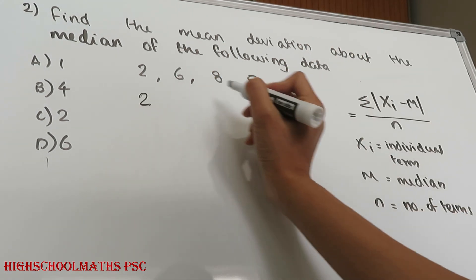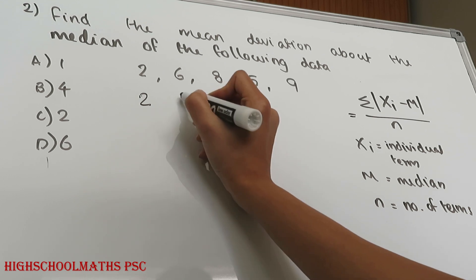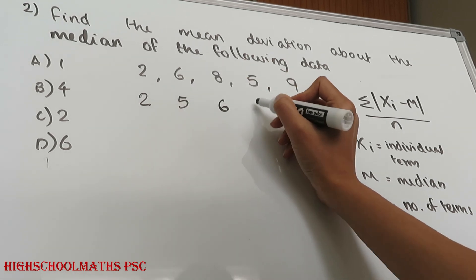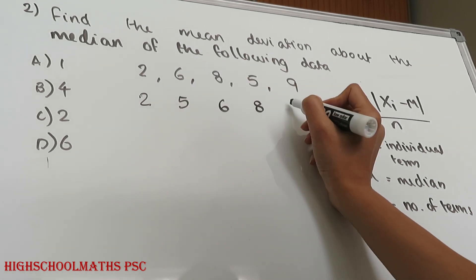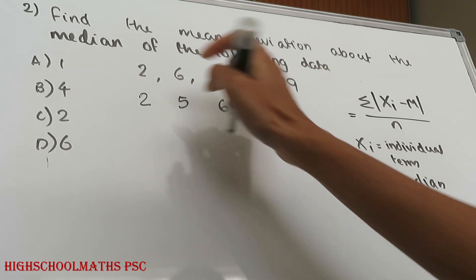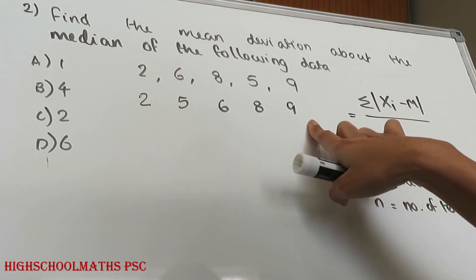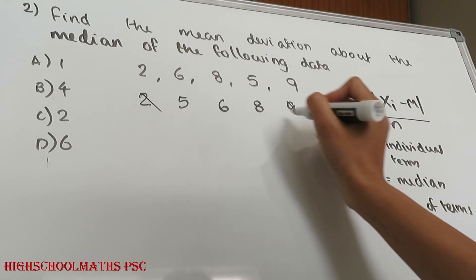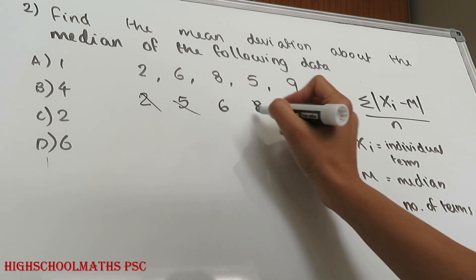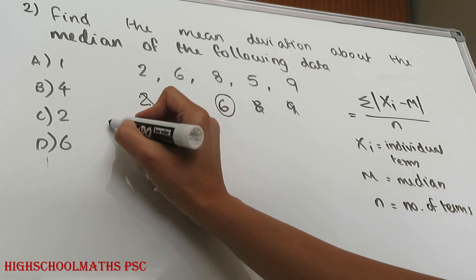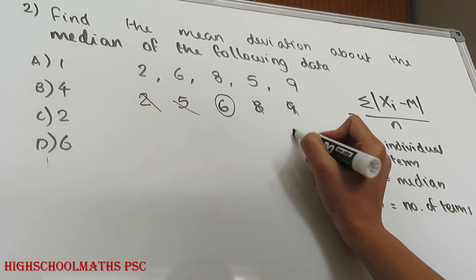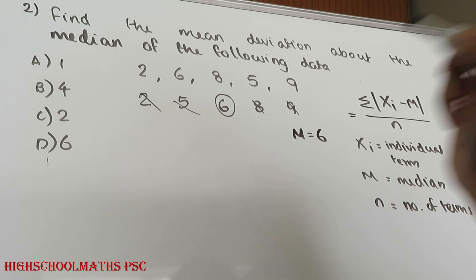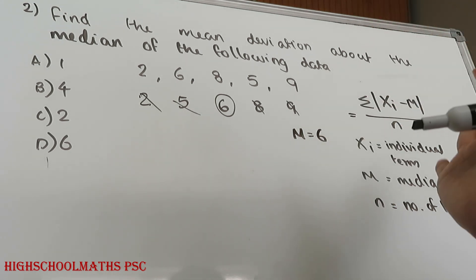In ascending order we have: 2, 5, 6, 8. The median is the middle value. We have the data in ascending order, and the median value is 6.